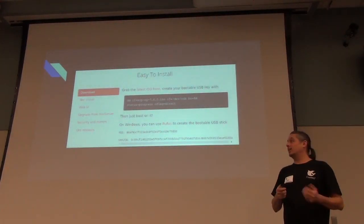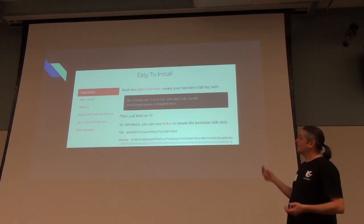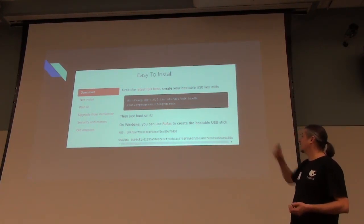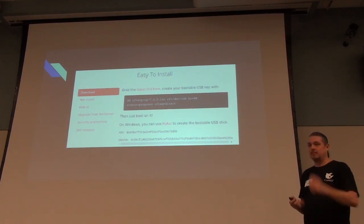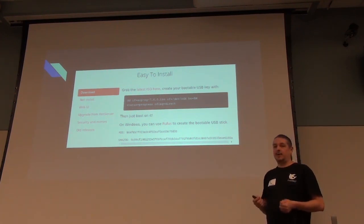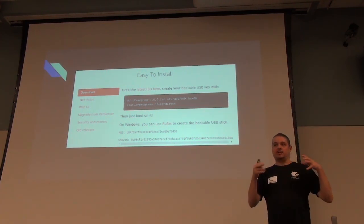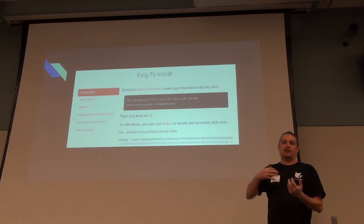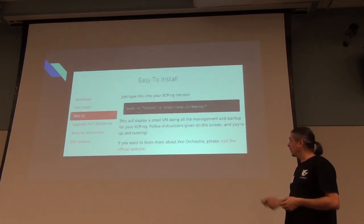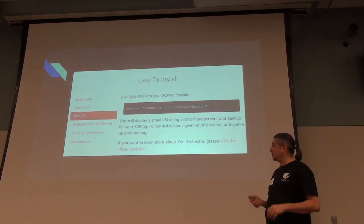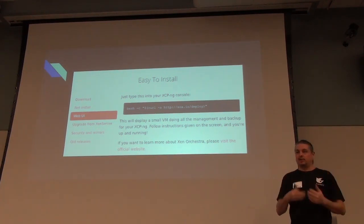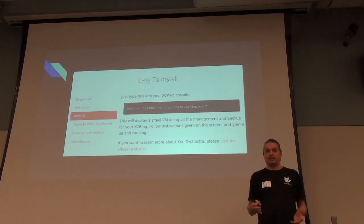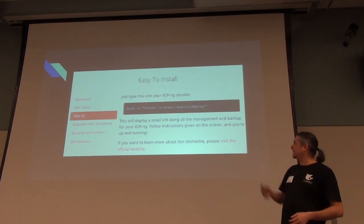For installation: grab the ISO, use Rufus or Etcher or your favorite write tool to create a bootable USB. They also have a net install stub that downloads extras online. Once loaded, there's a web UI available. By default, the server has no graphical interface at all — it boots straight to command line. A great easy method for new users is to curl the xoa.io deploy script, which is an automagical bash script that downloads an XVA file and auto-configures Xen Orchestra.